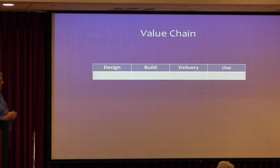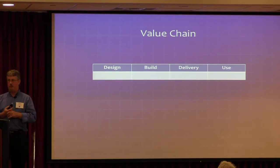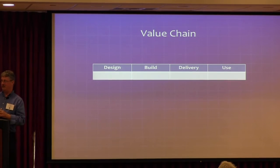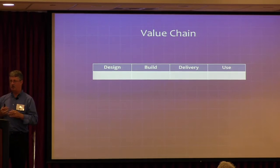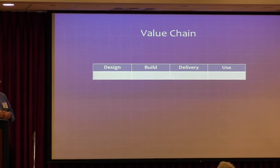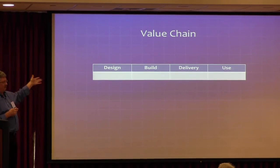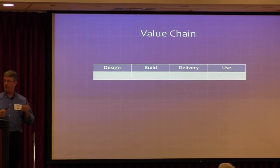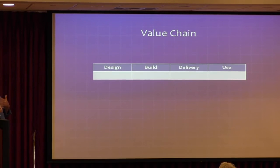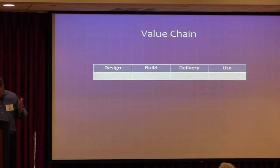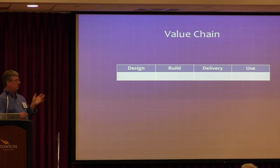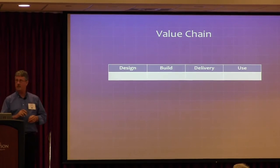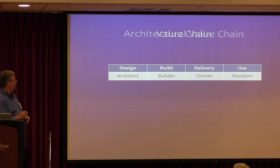Let me introduce a couple of concepts. One is value chain — what a value chain does is talk about the production cycle and how each unit adds value. We start with a design phase where we make something — the wire frames Homer had — then go into production to build it, then into delivery, and ultimately the customer gets to use it.